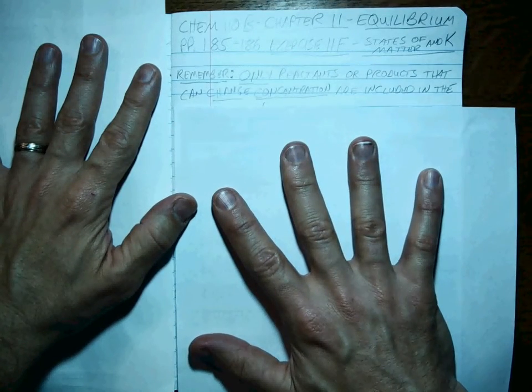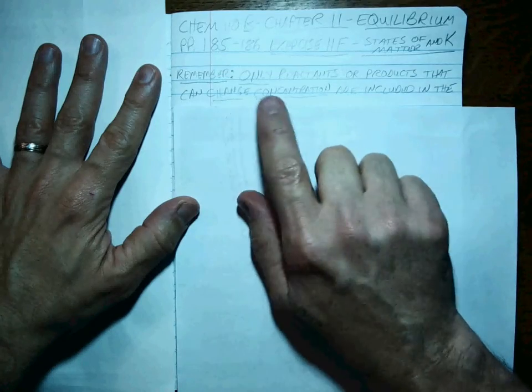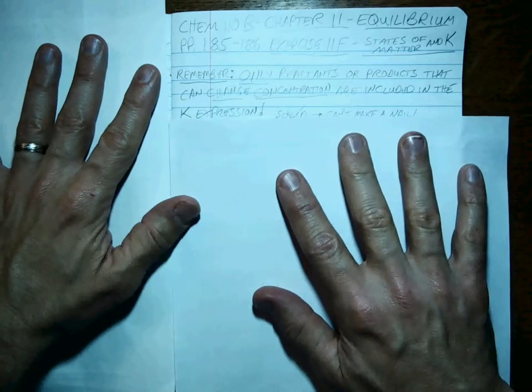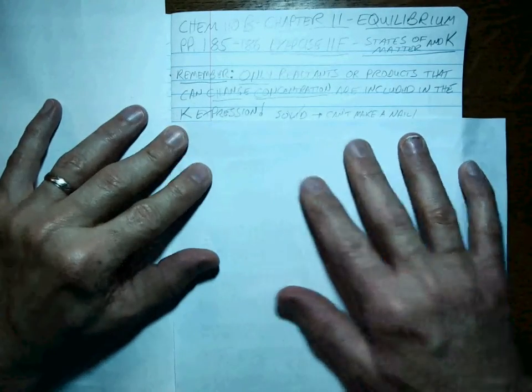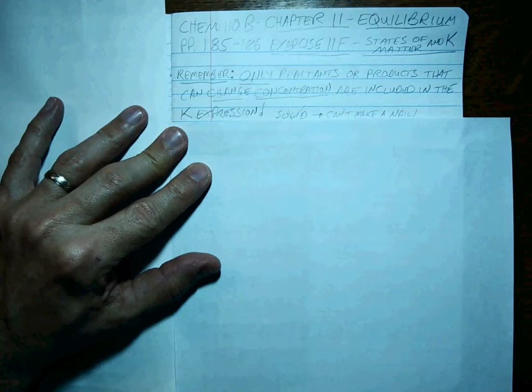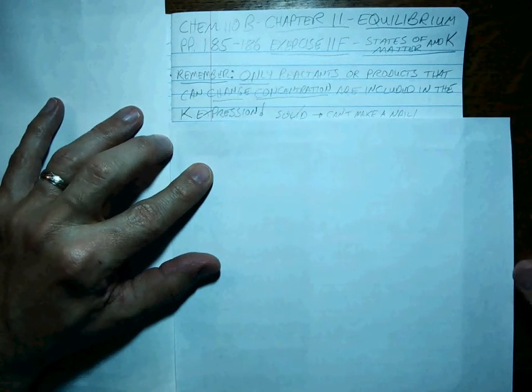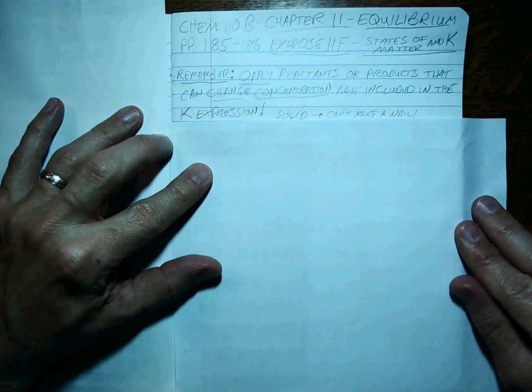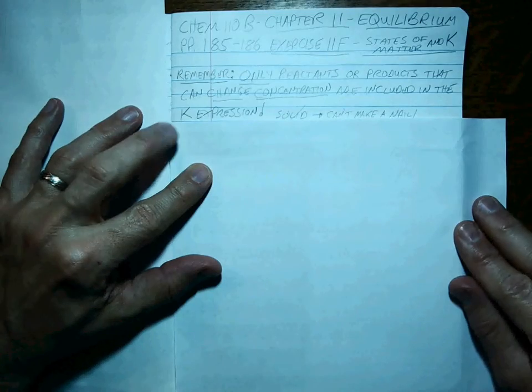Only the reactants or products that can actually change their concentration are included in the K expression. Only those that can change their concentration, whenever the reactants become products and the products go back to the reactants, and we calculate K, we need the concentrations. If a certain part doesn't change its concentration, it's not part of K.